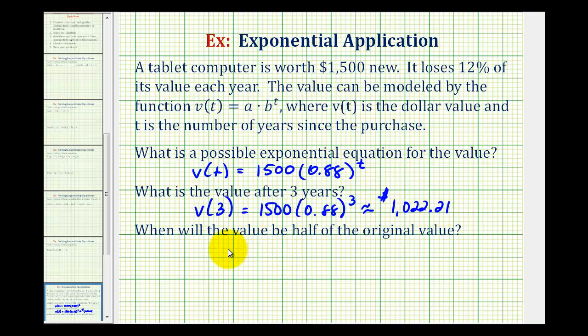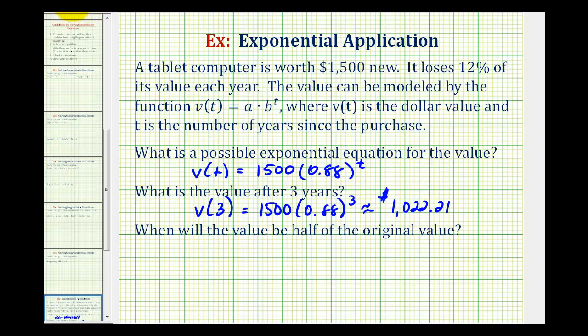And now for the last question, when will the value be half of its original value? Well, the starting value is 1,500. So half of this would be 750. So we want to set v(t) to 750 and then solve for t.